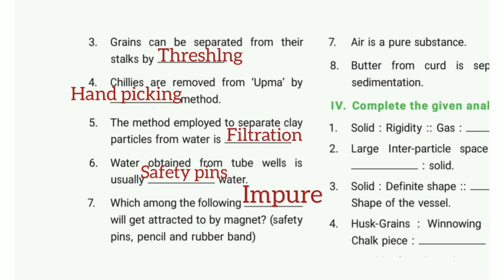Third one: grains can be separated from their stalks by? The answer is threshing. Fourth one: chillies are removed from a mixture by which method? The answer is hand picking. Fifth one: the method employed to separate clay particles from water is? The answer is filtration.